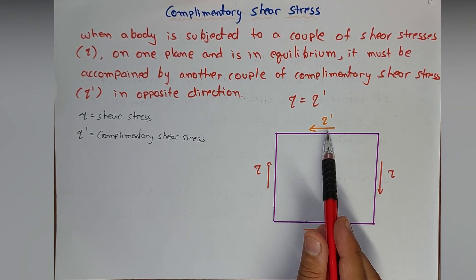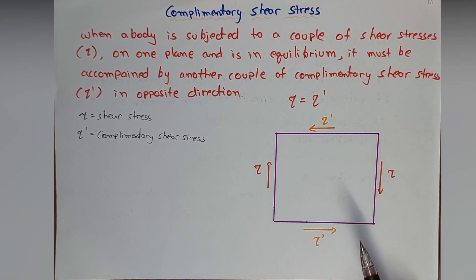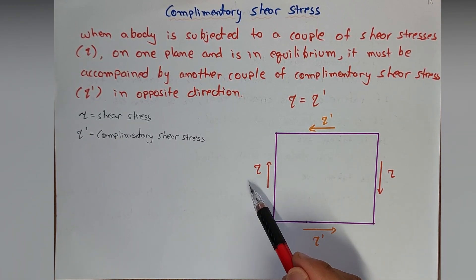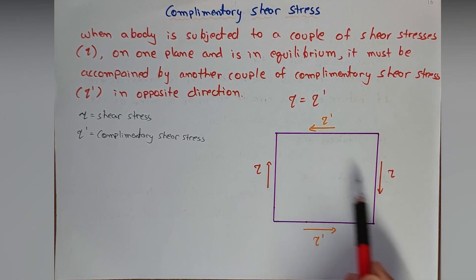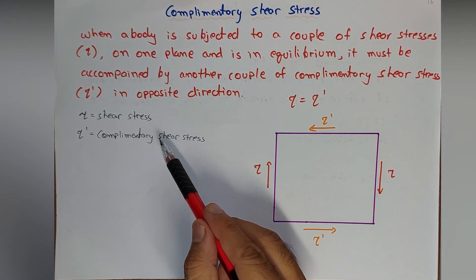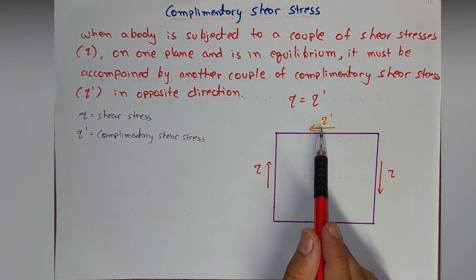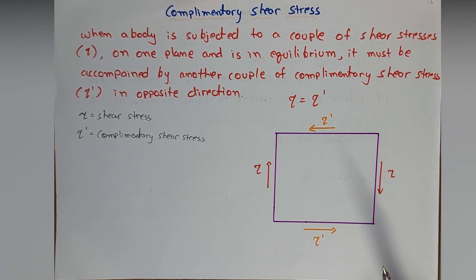If this is tau, this is tau dash. If this is clockwise, it is anticlockwise to keep this stable. This may be the reactive part, this is action, this is reaction. This is clockwise couple, this is anticlockwise couple. So this anticlockwise couple is known as tau dash, it is complementary shear stress, the reactive part to the shear stress or the couple of shear stresses acting on the body.